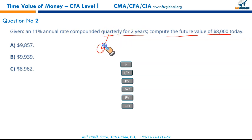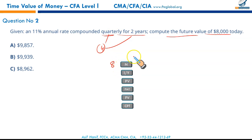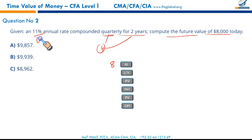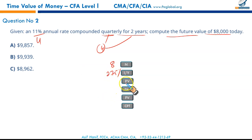Quarterly — in one year there are four quarters, so in two years there will be eight quarters total; N = 8. Since periods are in quarters, the interest must also be converted to quarterly: 11 ÷ 4 = 2.75%. Present value is $8,000 today.